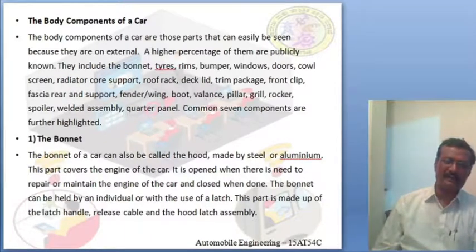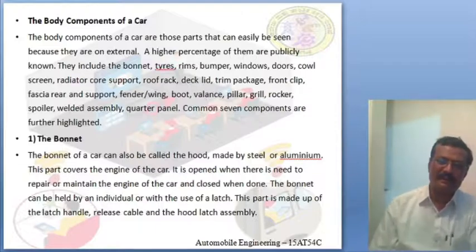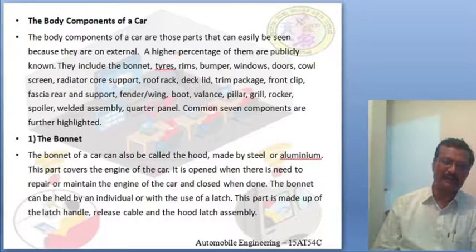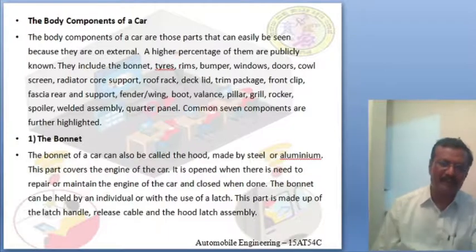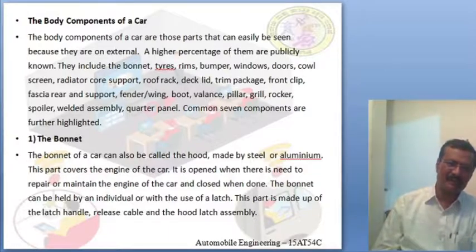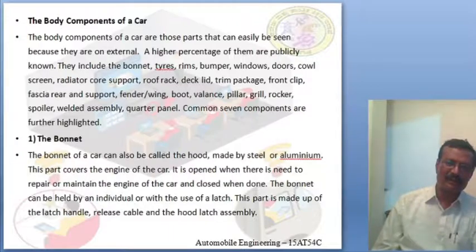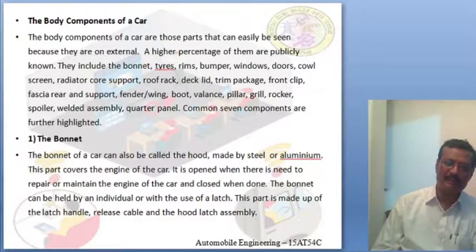These body components of the car are essential for vehicle body construction. They are constructed from various materials and include the bonnet, tire rims, bumper, windows, car doors, closed screen, radiator supports, roof rack, rim package, front claim, header layers, header wings, boot, valence, pillars, grill, rockers, and spiral welders, all assembled together in car body construction.